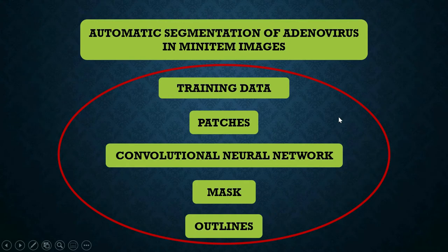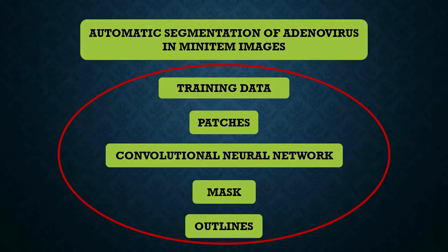Finally, we developed a neural network-based method for automatic segmentation of adenoviruses. This was achieved using U-Net, a convolutional neural network well known and very effective for medical image segmentation. It requires training data, and since we had very large images we had to extract patches from those images and use those patches as input to the network. The network outputs masks, and we get the outlines of those masks to highlight objects in the images we want to analyze.